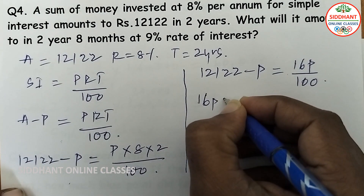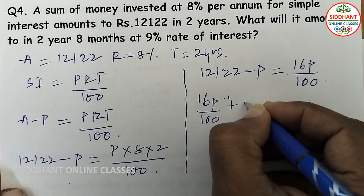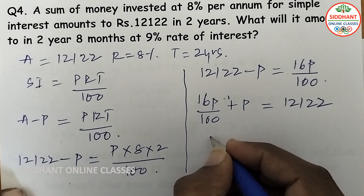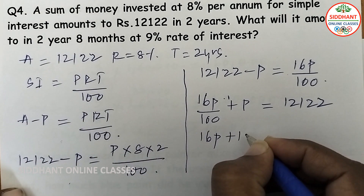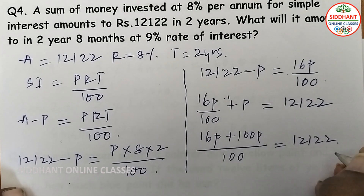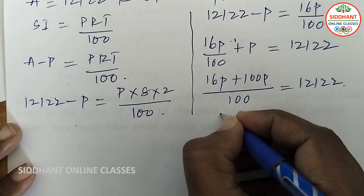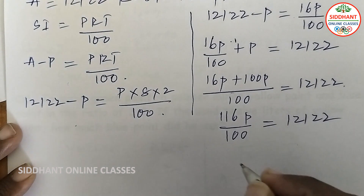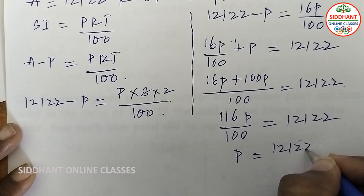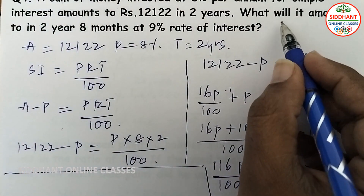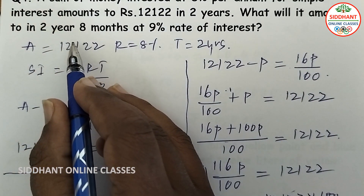After cross multiplication: 16P ÷ 100 plus P equals 12,122. That gives 116P ÷ 100 equals 12,122. So P equals 12,122 × 100 ÷ 116, which gives P equals Rs.10,450.